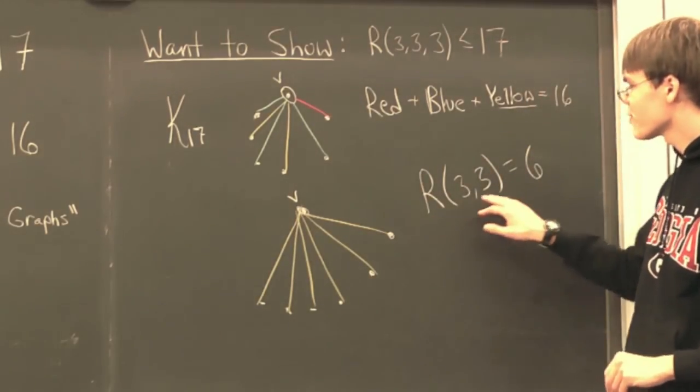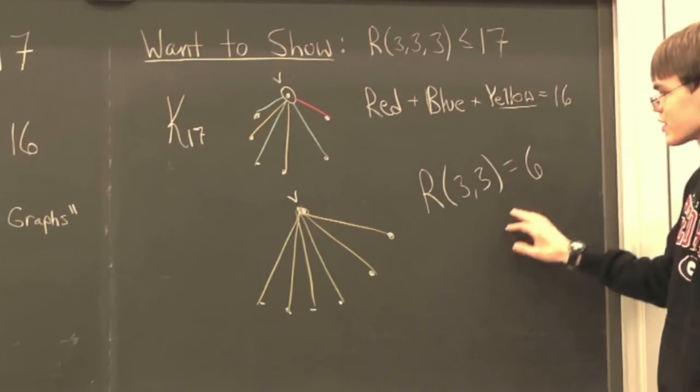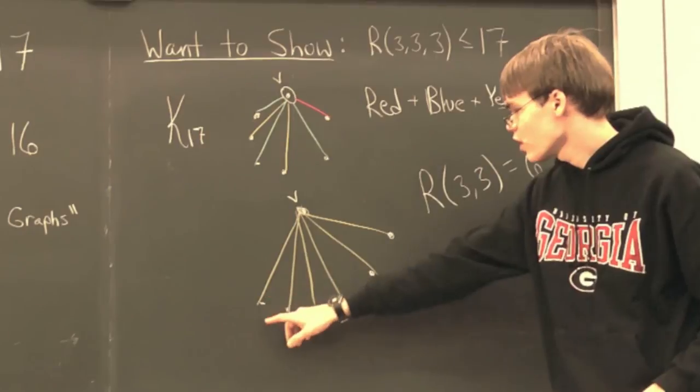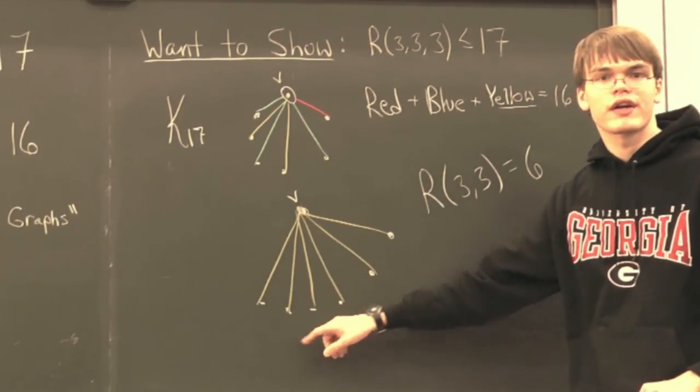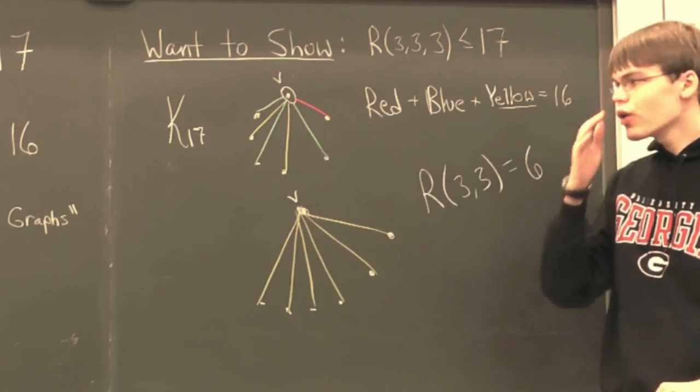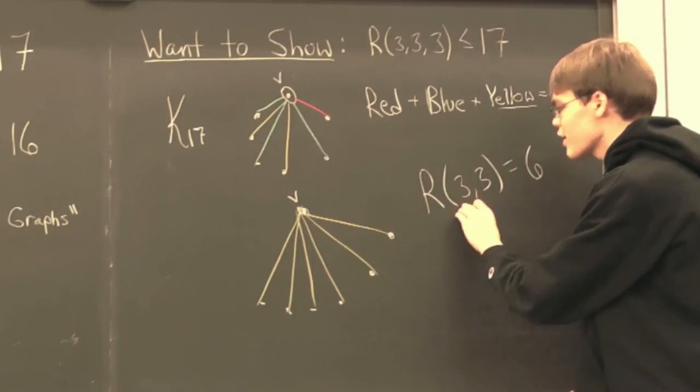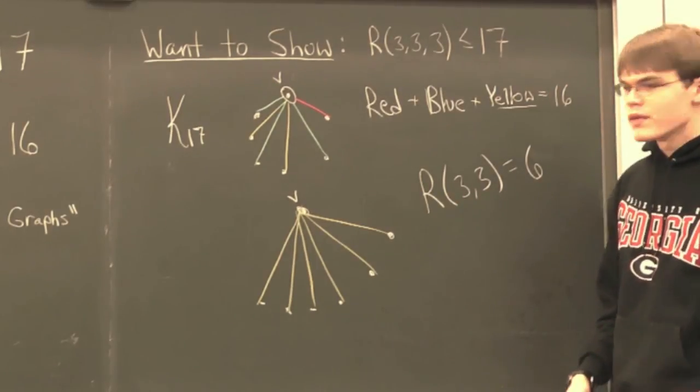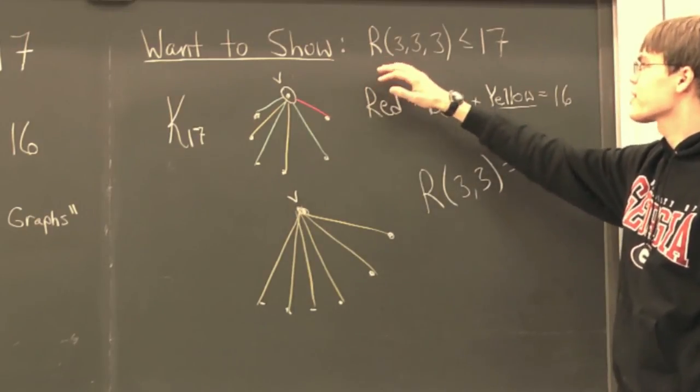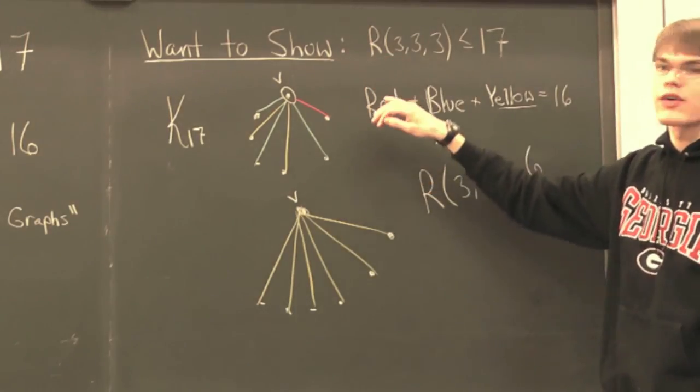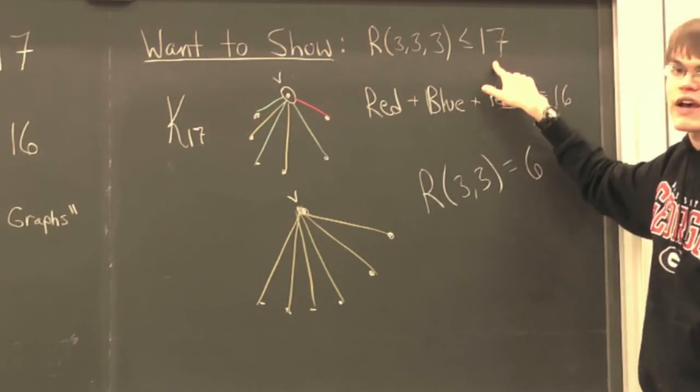And so, by virtue of how this Ramsey number is defined, we proved that it was equal to six. And so, in particular, if we consider this complete graph on six vertices that is two-colored, then we know that it must have a monochromatic triangle that is either blue or red. And so, we are guaranteed a monochromatic triangle in either yellow, red, or blue on the complete graph on 17 vertices.